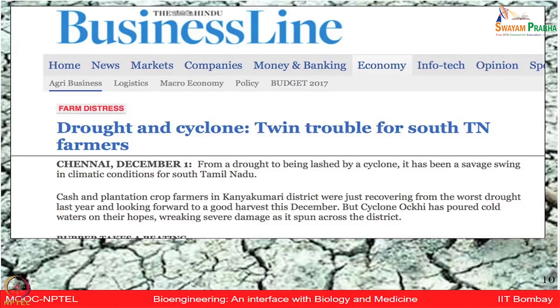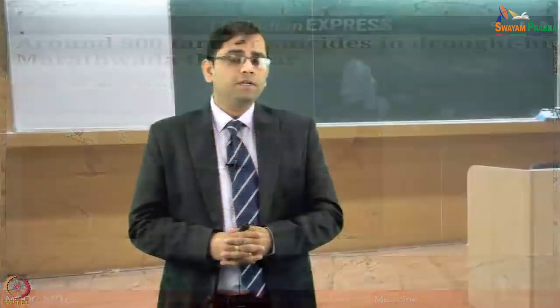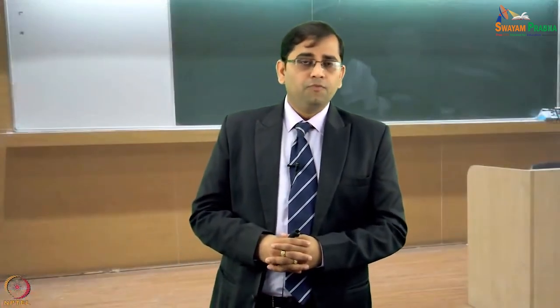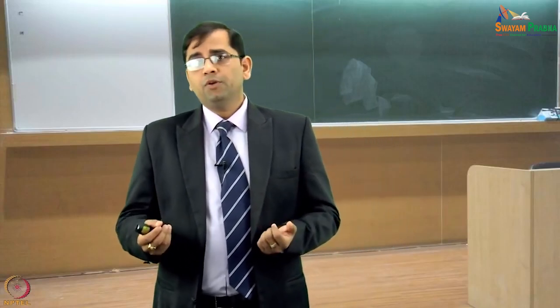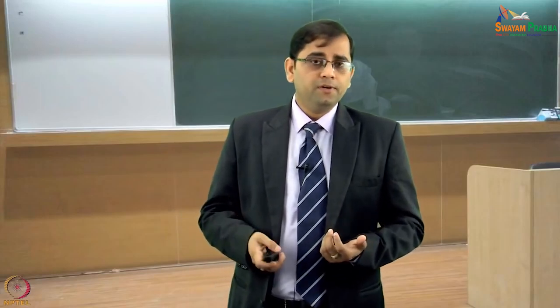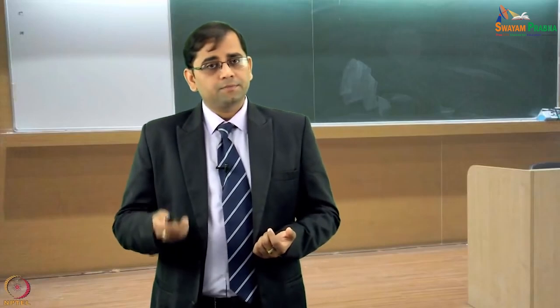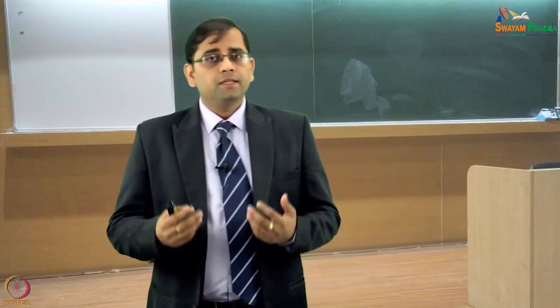Showing a few news clips: drought and cyclone — the twin trouble for South Tamil Nadu farmers. Around 900 farmers committed suicide in drought-hit Marathwara this year. Imagine farmers working so hard all year, and then untimely natural catastrophes could destroy their entire effort, leaving barren land. In which way can genetic engineering and biotechnology offer some help to increase plant productivity and overall food production?